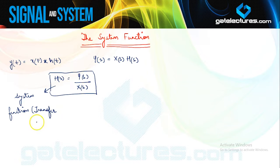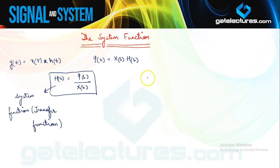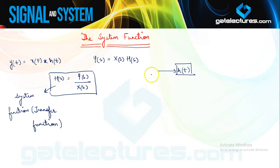As we have seen for h(t), most of the properties of the system can be determined using h(t). Similarly, using H(s) we can define a lot of properties of the system. In the time domain the system can be defined completely using its impulse response h(t). When an input x(t) is applied to this system we get an output y(t) which is the convolution of x(t) with h(t).